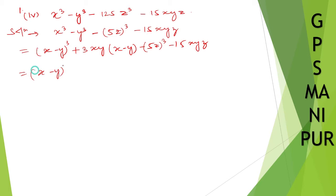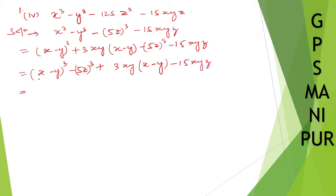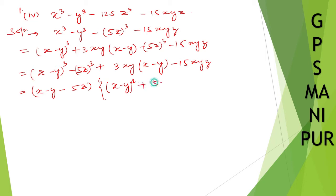Let me write down x minus y whole cube minus 5z whole cube, plus 3xy into x minus y, minus 15xyz. Now applying a cube minus b cube — it will be a minus b, that is x minus y minus 5z — times a square plus ab plus b square, which gives x minus y whole square, plus 5z into x minus y, plus 5z whole square.